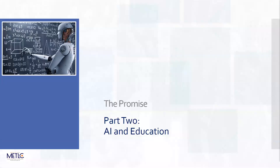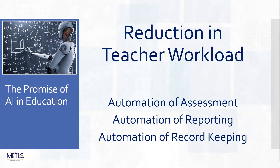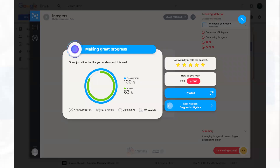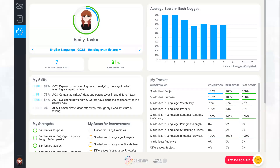So how's it being used in education? Well it's using very similar techniques, but broadly speaking the way it's being sold at the moment is that it's about reducing teacher workload. This is through three ways really: through the automation of assessment, the automation of reporting, and the automation of record keeping. You can see this in slides from Century - feedback to the student is automatic.